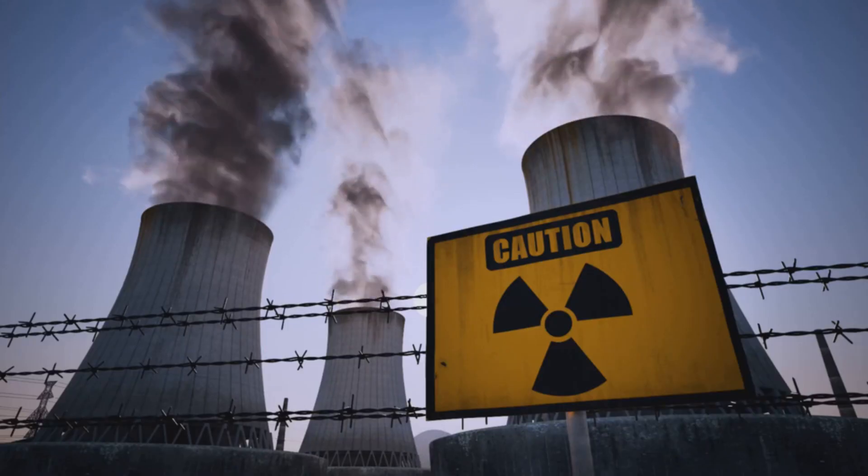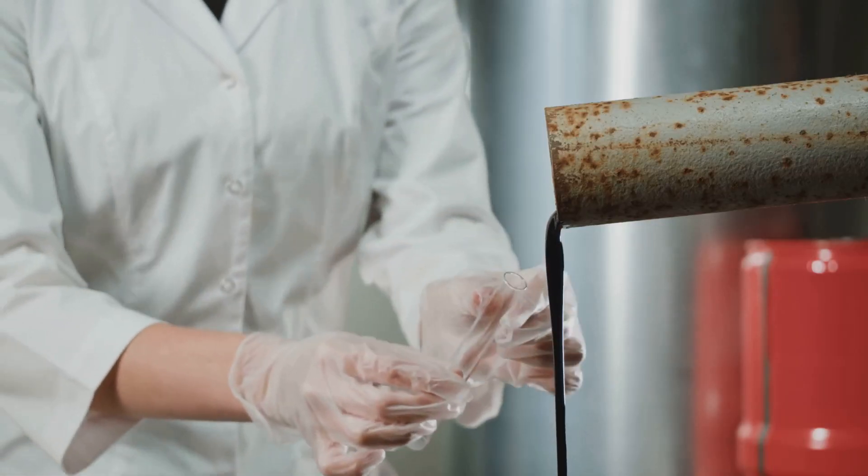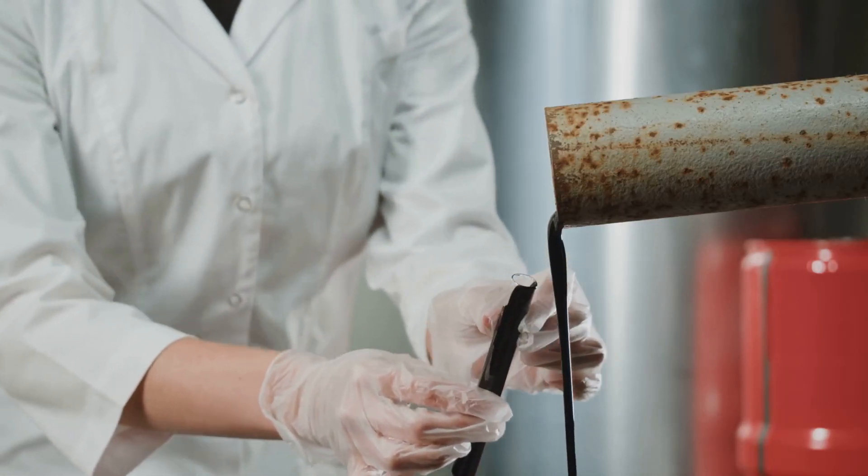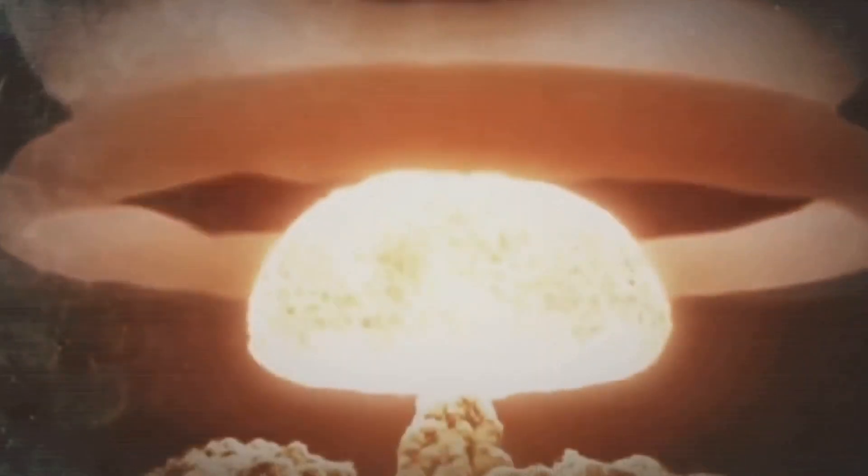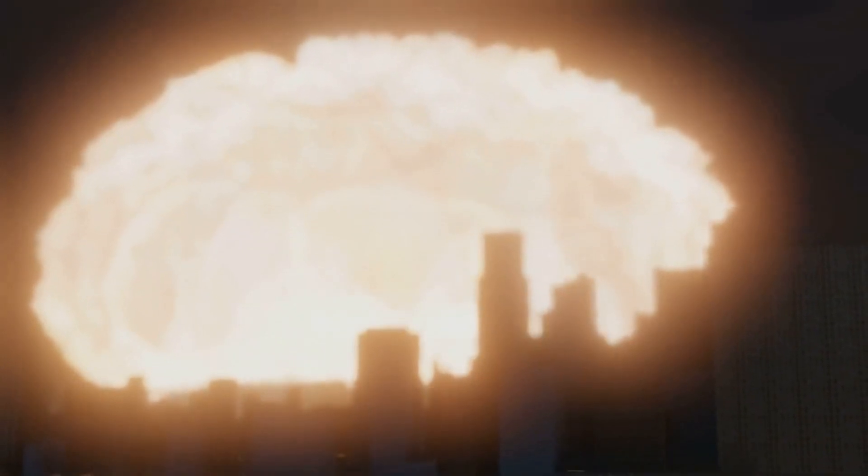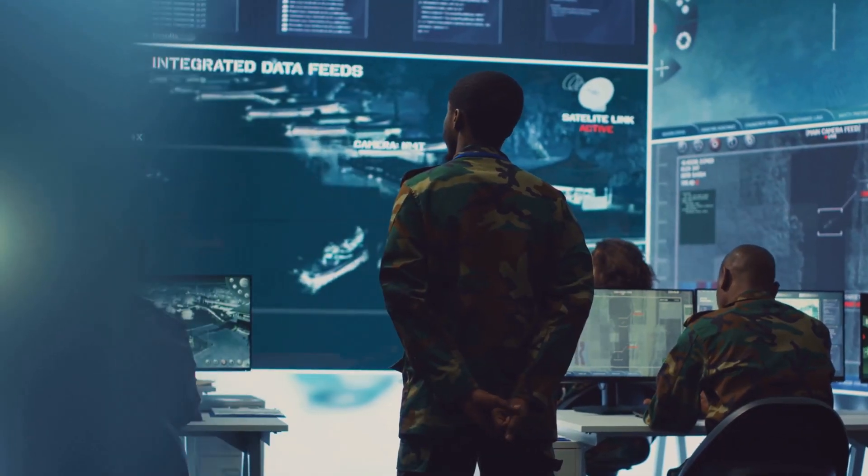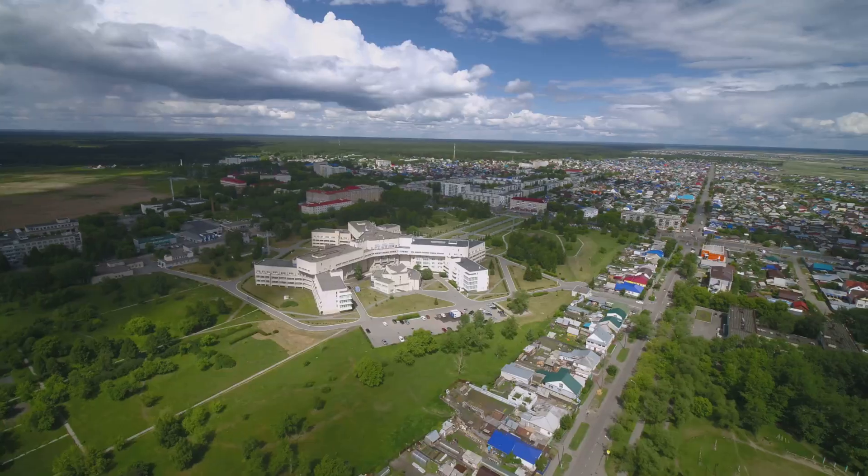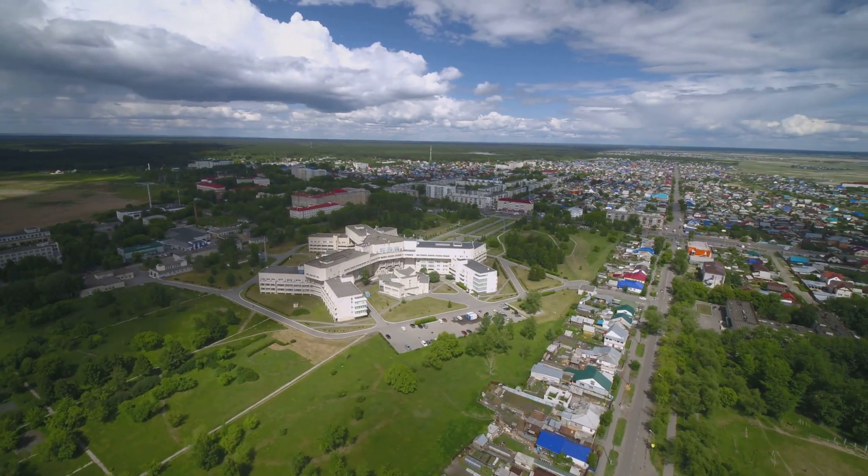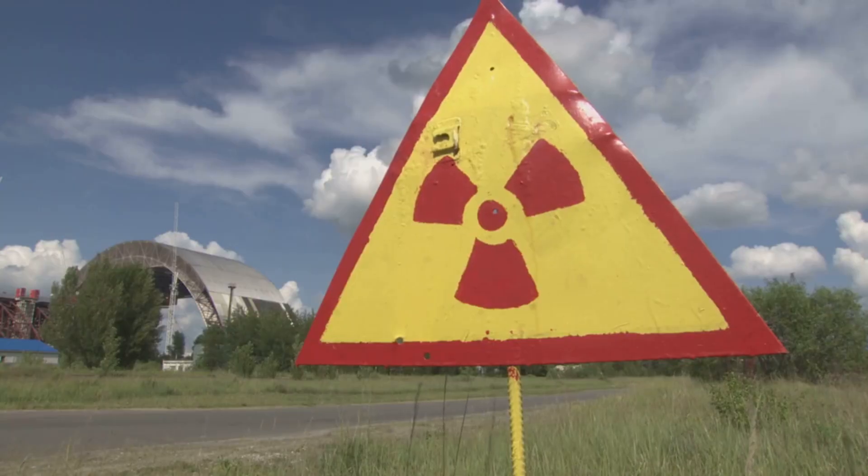Of course the same properties that make plutonium-239 an excellent fuel also make it a key ingredient for nuclear weapons. The uncontrolled chain reaction of fissioning plutonium atoms can release a devastating amount of energy in a fraction of a second. This dual-use nature of plutonium is why its production and handling are so strictly monitored around the world. The international community works hard to ensure that plutonium intended for peaceful energy production doesn't fall into the wrong hands.